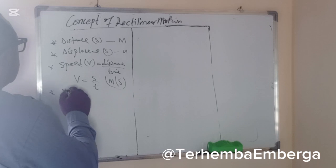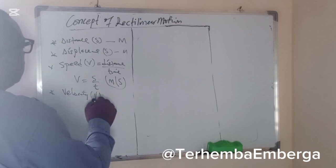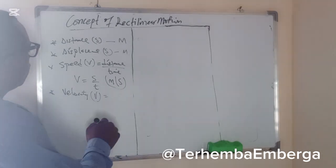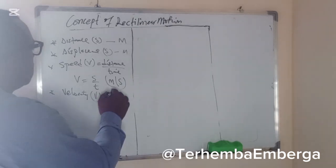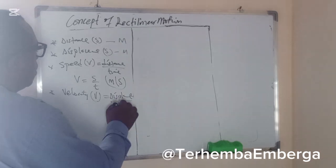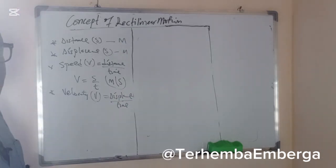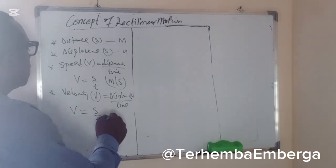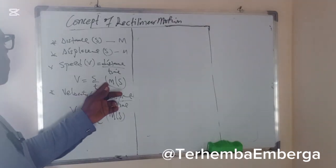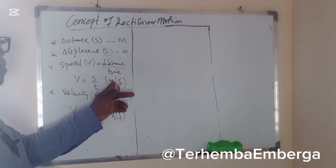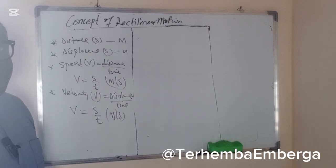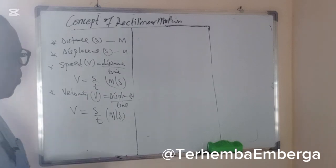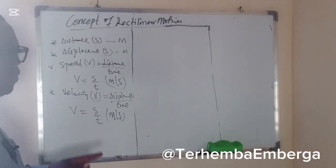We'll talk about velocity, denoted by v. It is the rate of change of displacement — displacement over time. So we can say that v is equal to s over t, and the unit is also meters per second. When you look at this, both velocity and speed are measured in meters per second, and one will ask what's the difference between the two. Speed is a scalar quantity while velocity is a vector quantity.